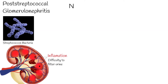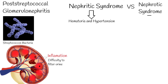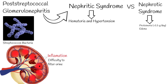Post-streptococcal glomerulonephritis is presented as nephritic syndrome, which means hematuria and hypertension are more prominent, while proteinuria is less pronounced. In contrast, nephrotic syndrome is characterized by severe proteinuria greater than 3.5 g/day, and prominent edema. So, post-streptococcal glomerulonephritis is characterized by nephritic syndrome, not nephrotic syndrome.